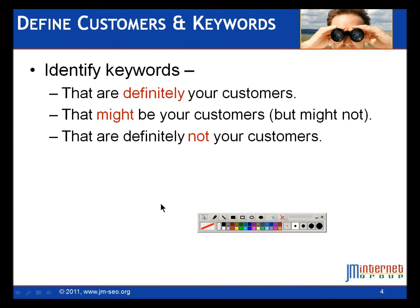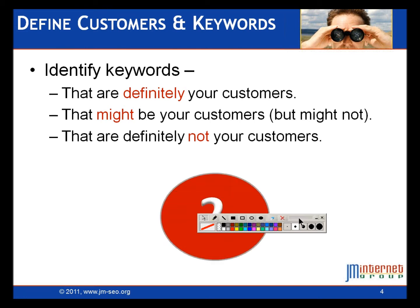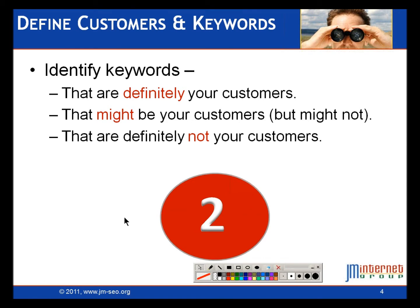We want to think through what searches are definitely our customers, what searches have crossover where they might or might not be our customers, and what searches are definitely not our customers. In our cat example: definitely our customer — cat boarding. Might be our customer — pet boarding, animal boarding — could be looking for cat boarding or dog boarding. Definitely not our customer — dog boarding. We want to map out our keyword match types and identify this problem of crossover, dogs versus cats.